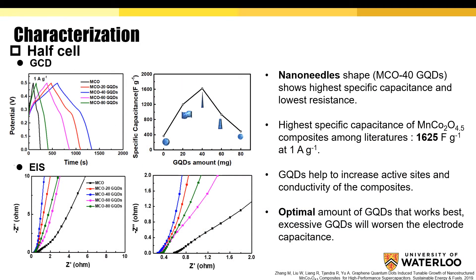In the GQDs and EIS analysis, the nano-needle shape composites demonstrated the highest capacitance and lowest resistance. It is obvious that GQDs help to increase the active sites and conductivity of the composite. There is an optimal amount of GQDs that works best, and excessive GQDs will worsen the electrode capacitance.